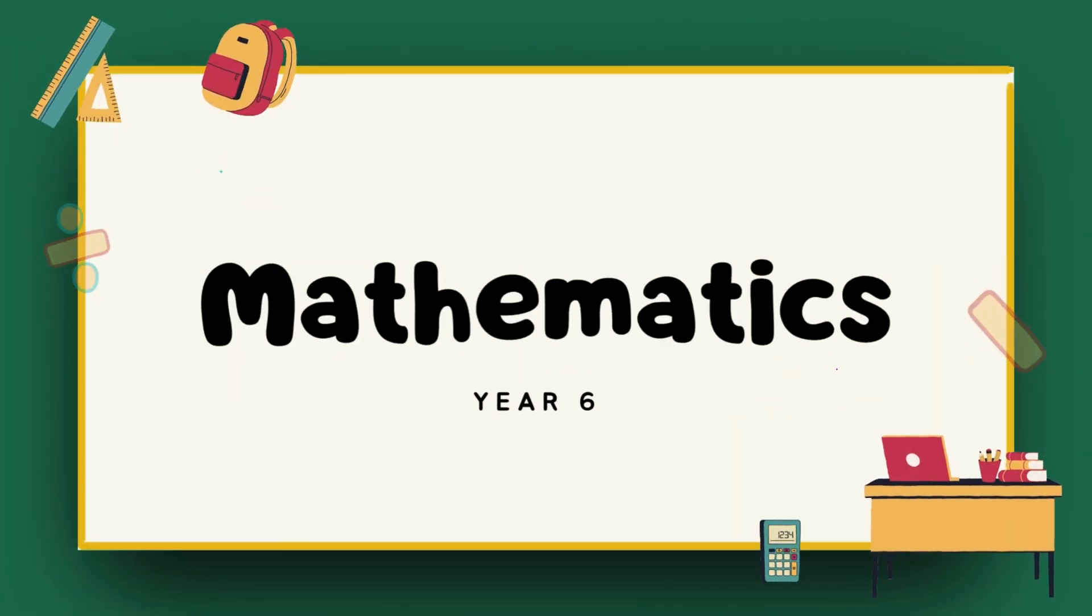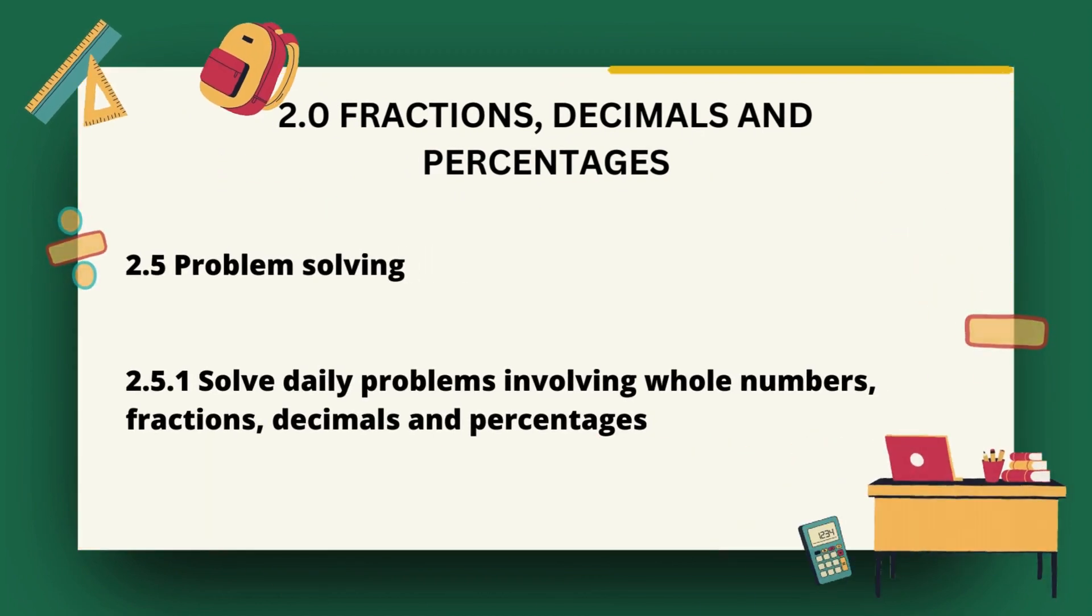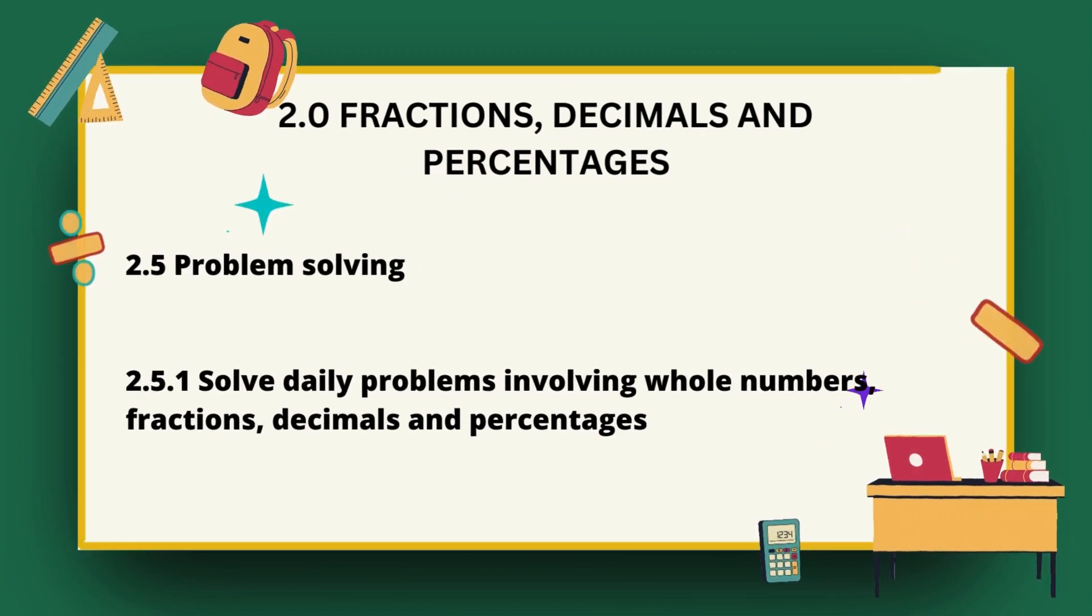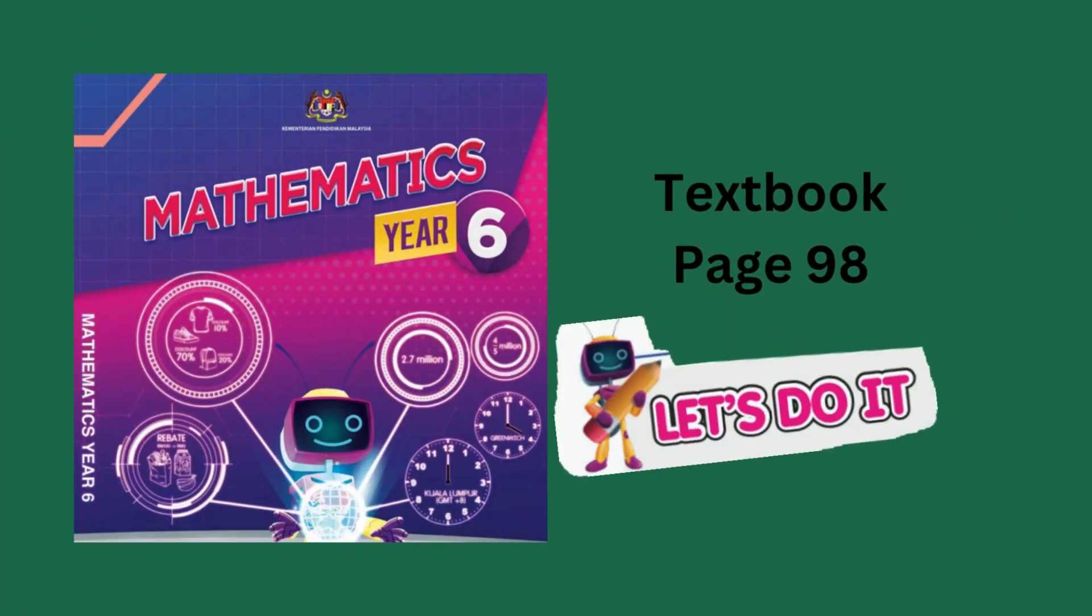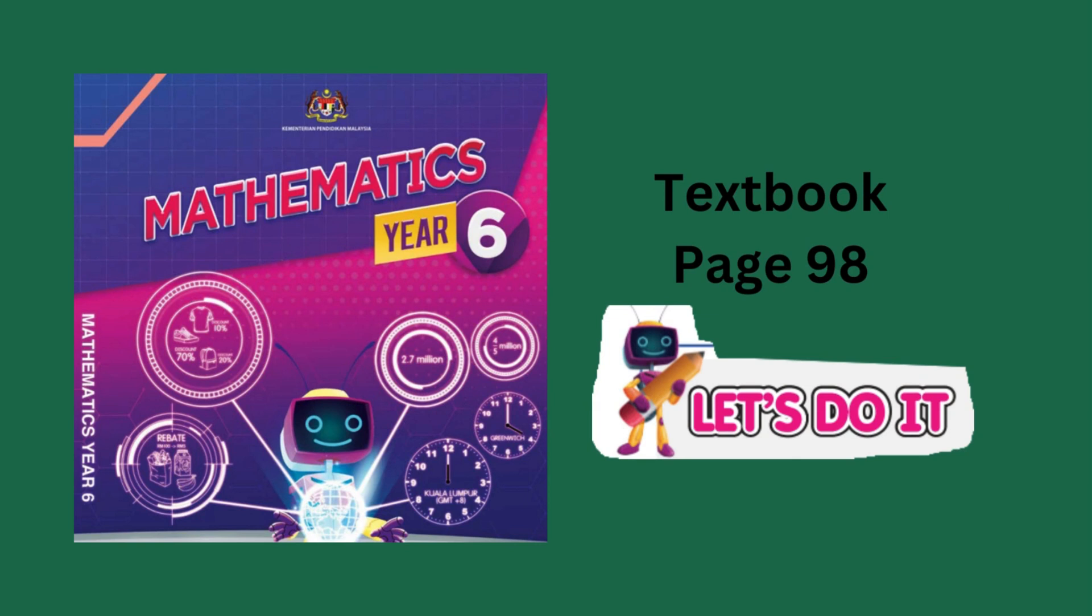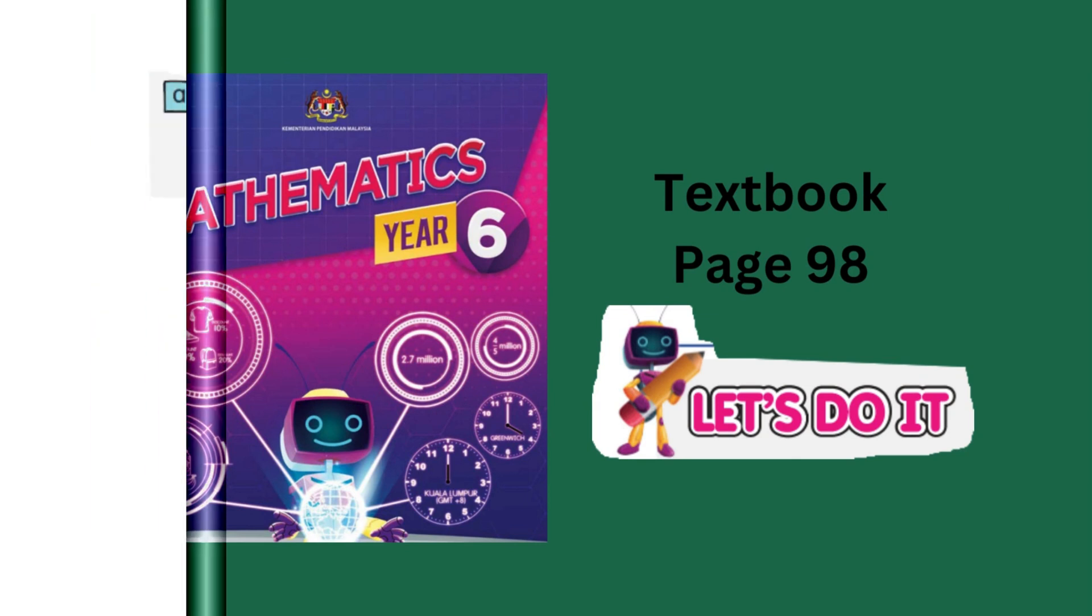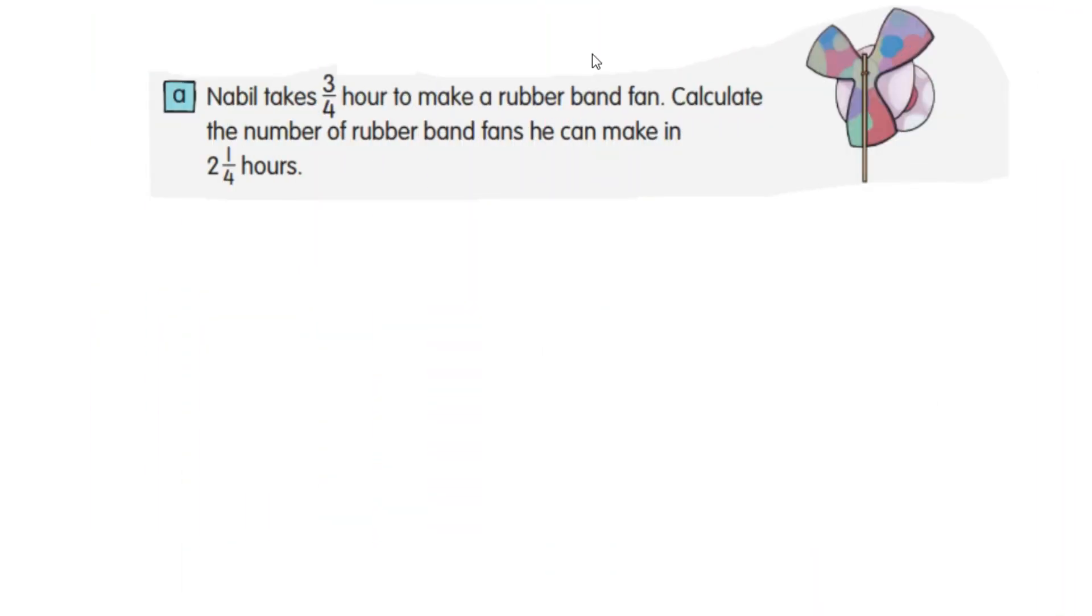Hi children, today we will discuss the questions on fractions, decimals, and percentages. Refer to your textbook page 98. Question A: Nabil takes 3/4 hour to make a rubber band fan. Calculate the number of rubber band fans he can make in 2 1/4 hours.